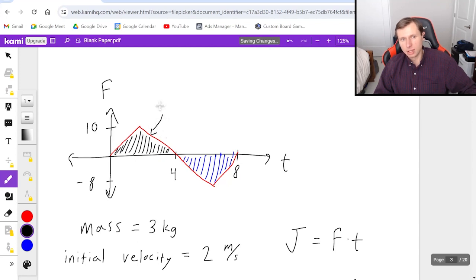So for the black triangle, area is one half base times height. Base is four, height is 10. Plug that in the calculator, or honestly, that's not too bad. You get 20 for the first triangle.